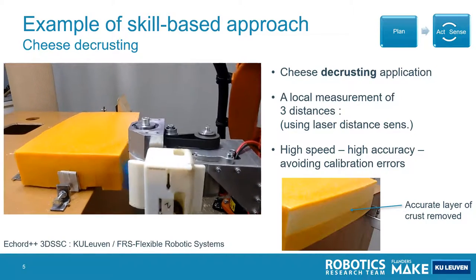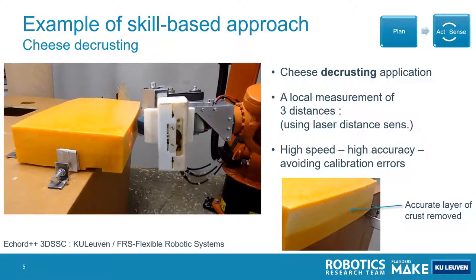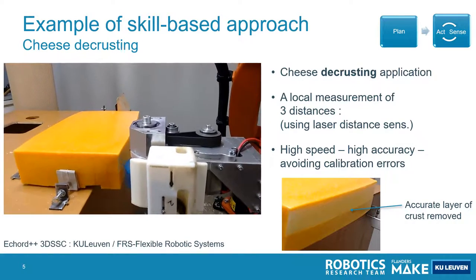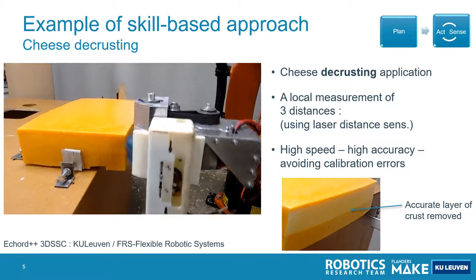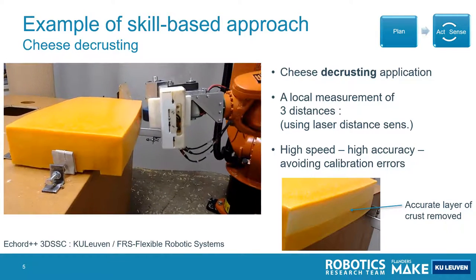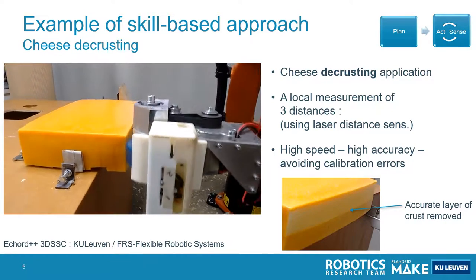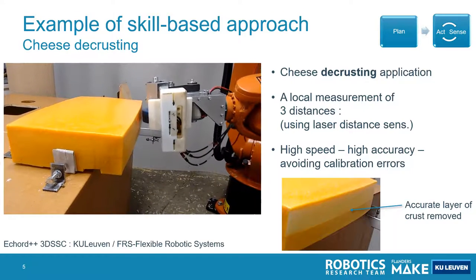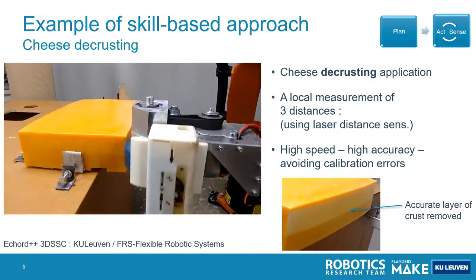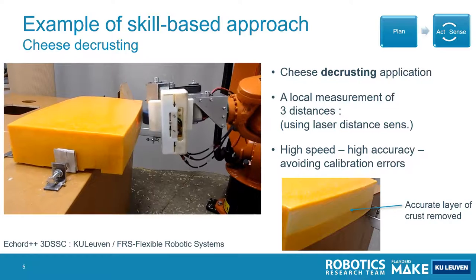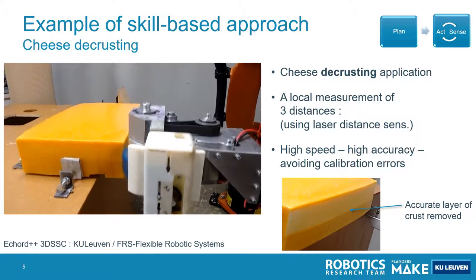This crust removal skill consists of 3 laser distance sensors that scan the surface of the cheese, model the surface of the cheese and then follow this model trajectory, while at the same time making sure that the laser distance sensors keep in range of their measurement range.